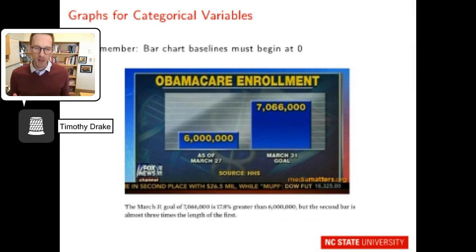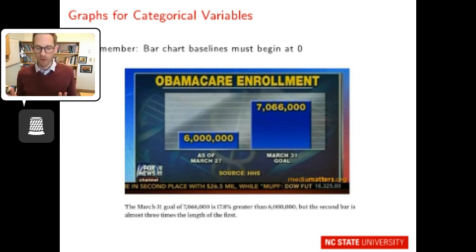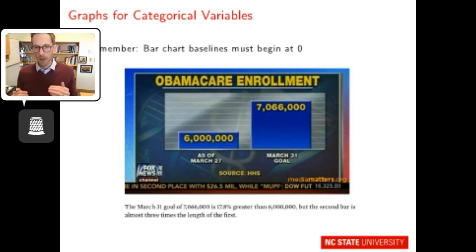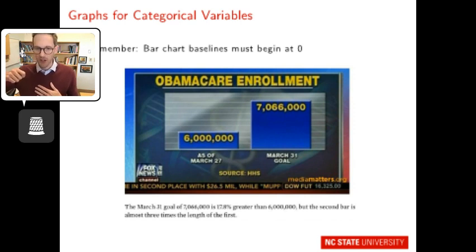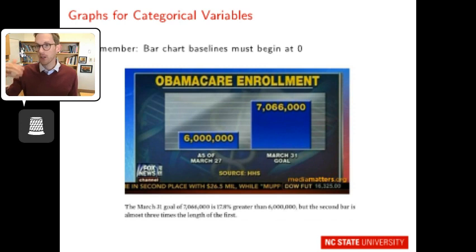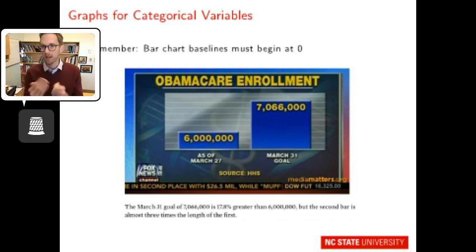It's really important to anchor your bar charts at zero. This Fox News graphic on Obamacare enrollment shows 6 million enrollments by March 27th versus a goal of just over 7 million by March 31st. But the bar chart makes that difference look two or three times larger than it really is. If you were to anchor the y-axis at zero, it's really only about 17.8% greater — not two or three hundred percent. You can see how not anchoring at zero can deceive people or show something disproportionate.